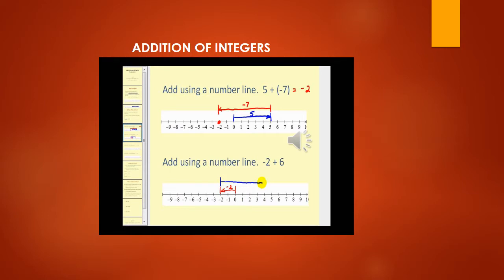In the second example we have minus 2 and plus 6. First we move from 0 to minus 2, then from minus 2 we take 6 places to the right, going up till 4. The distance covered is 6 places: minus 2 to minus 1, minus 1 to 0, 0 to 1, 1 to 2, 2 to 3, 3 to 4. So after adding these we get 6 minus 2, which is equal to 4.